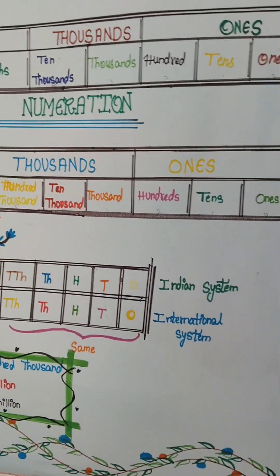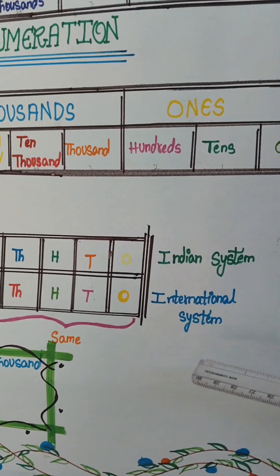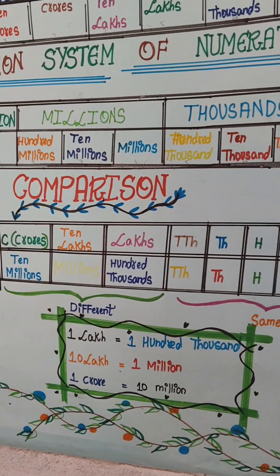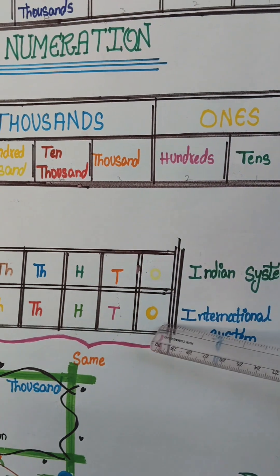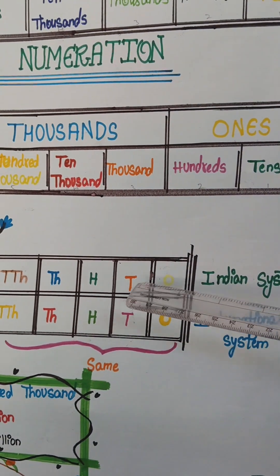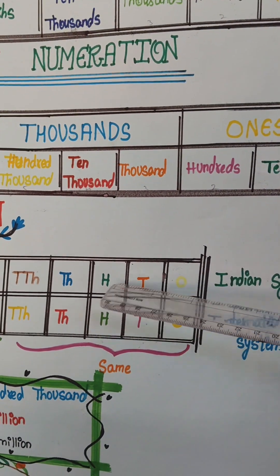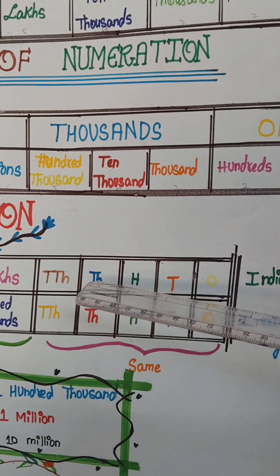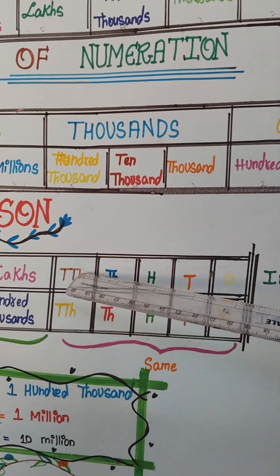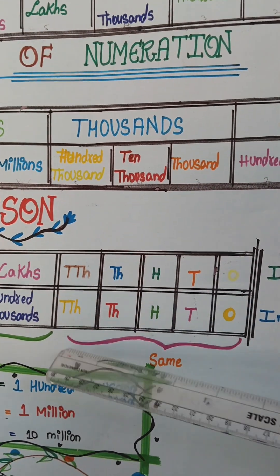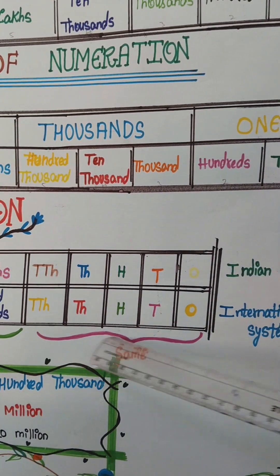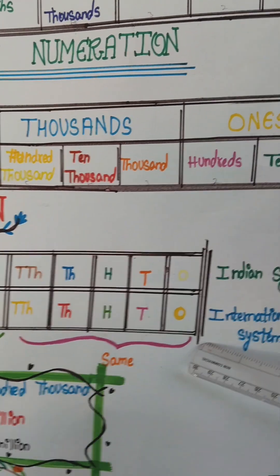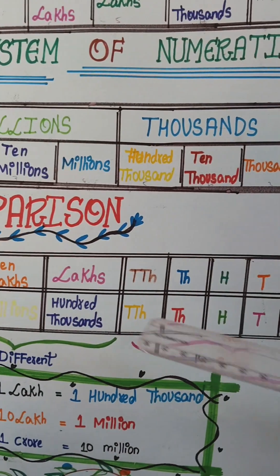Now when we compare the Indian system and the international system — this is a comparison. We have ones and ones — same. Tens and tens — same. Hundreds and hundreds — same. Thousands and thousands — same. Ten thousands and ten thousands — same. Till here it's all the same. Now the difference is here in...